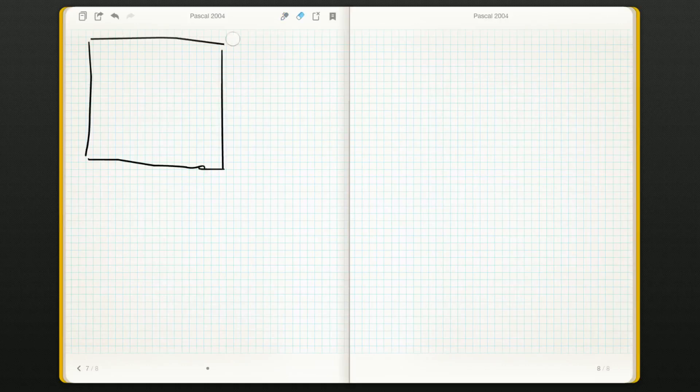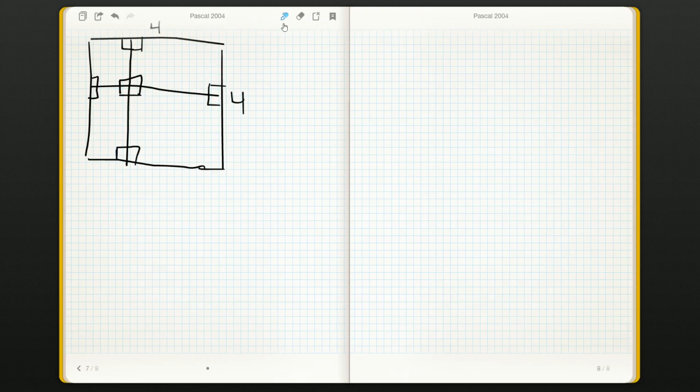So we have our square here, side lengths 4 and 4, the square. Then what they did is they sort of just chopped it up into, we can tell from the right angles, that we've got rectangles here. Okay, we have rectangles.